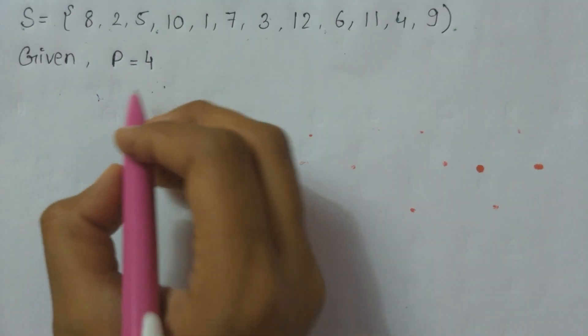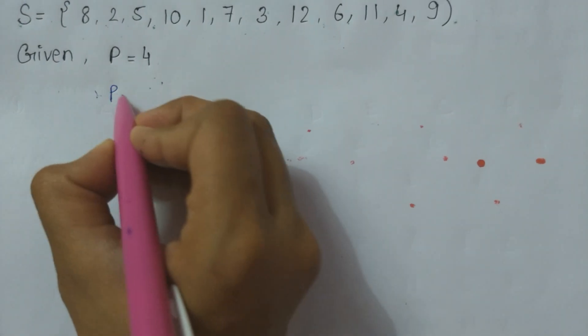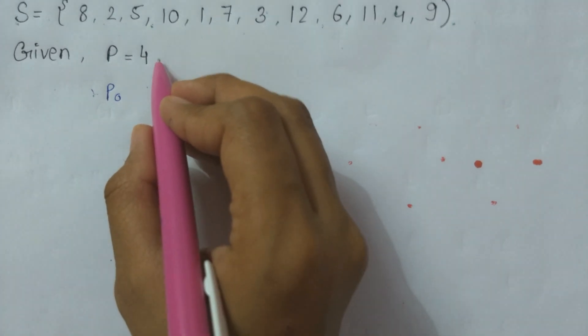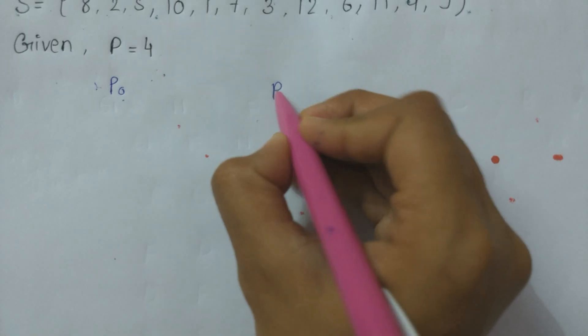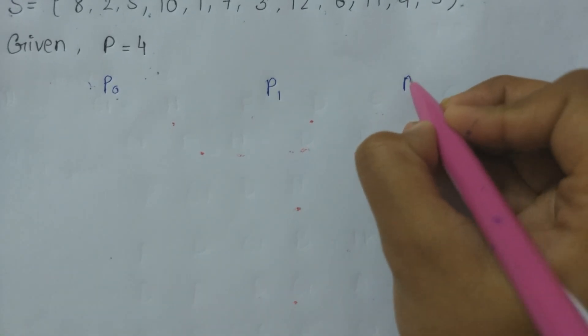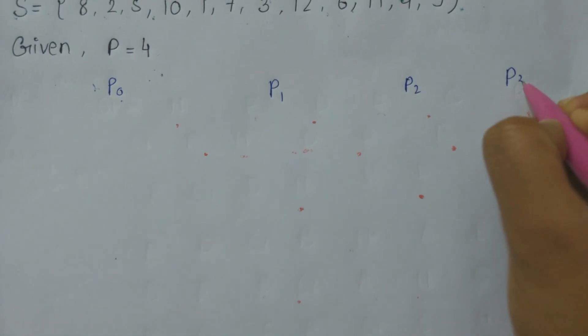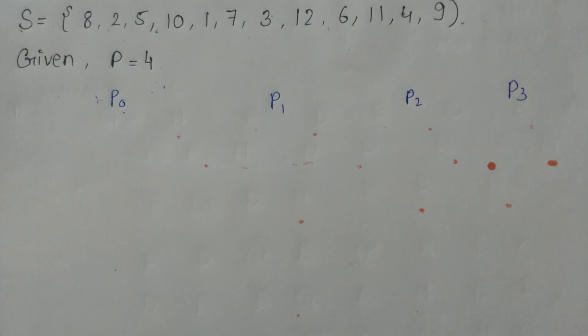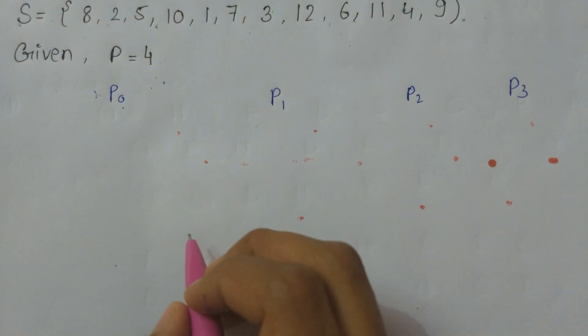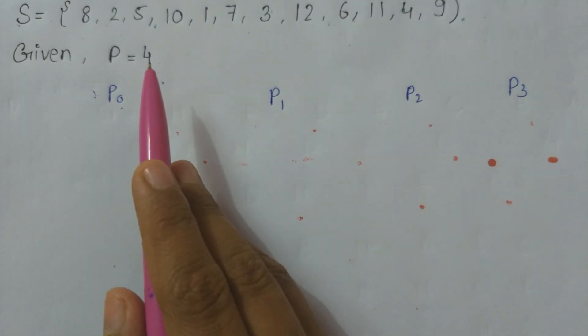According to the value of partition we will divide the series. Here we have given value of partition as 4, so we will start from 0: P0, P1, P2, and P3. Now these contains 12 numbers.